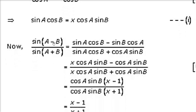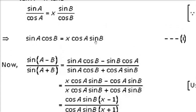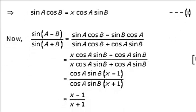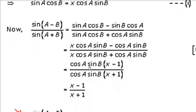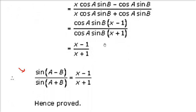sin(a − b) = sin(a)·cos(b) − sin(b)·cos(a), and sin(a + b) = sin(a)·cos(b) + cos(a)·sin(b). We know sin(a)·cos(b) = x·cos(a)·sin(b). So substitute x·cos(a)·sin(b) in both places. Factor out cos(a)·sin(b): inside the numerator you get (x − 1), and in the denominator (x + 1). These cancel, giving (x − 1)/(x + 1). This is what we had to prove.